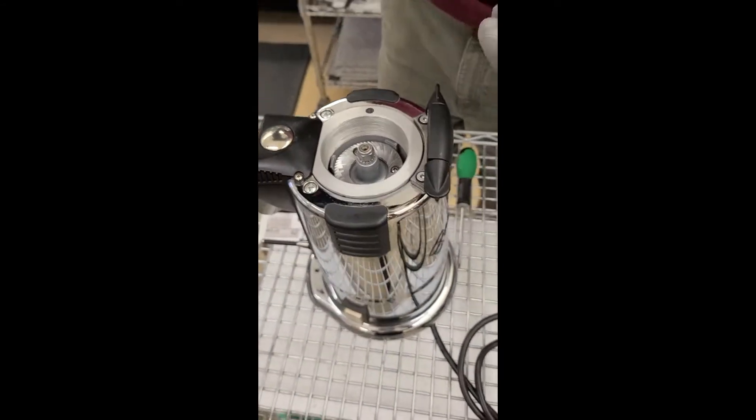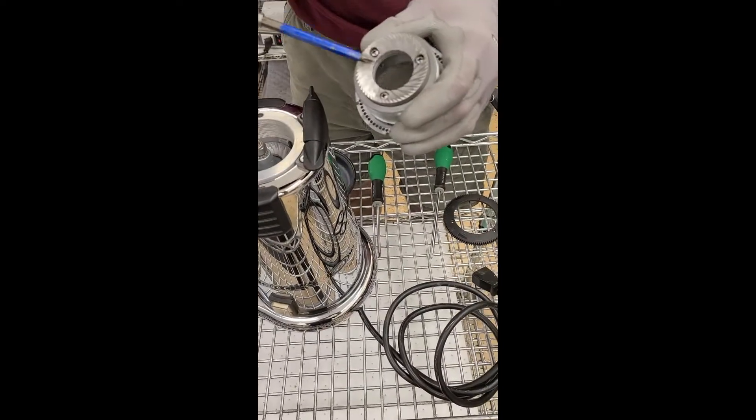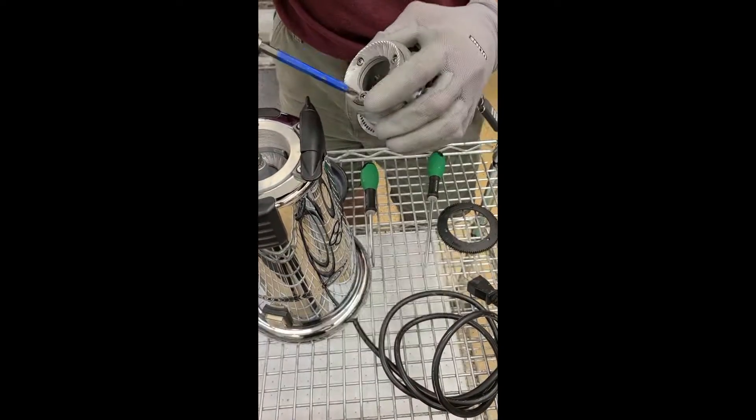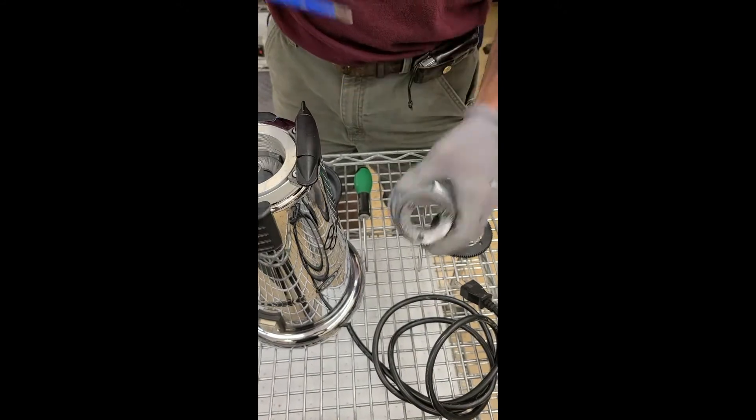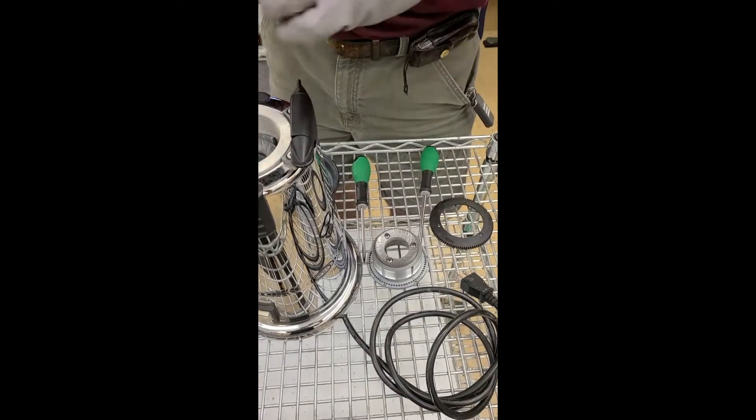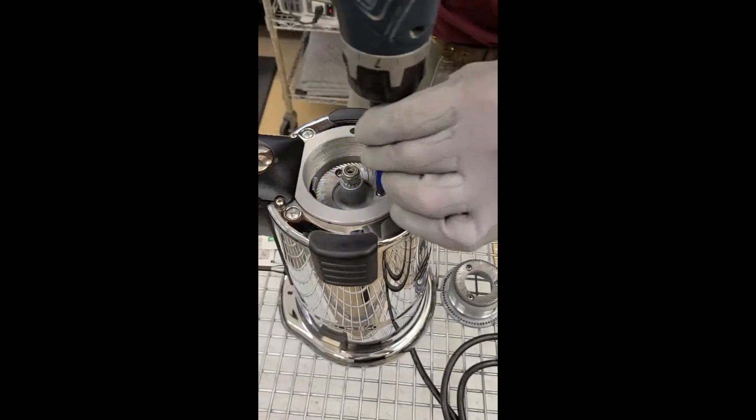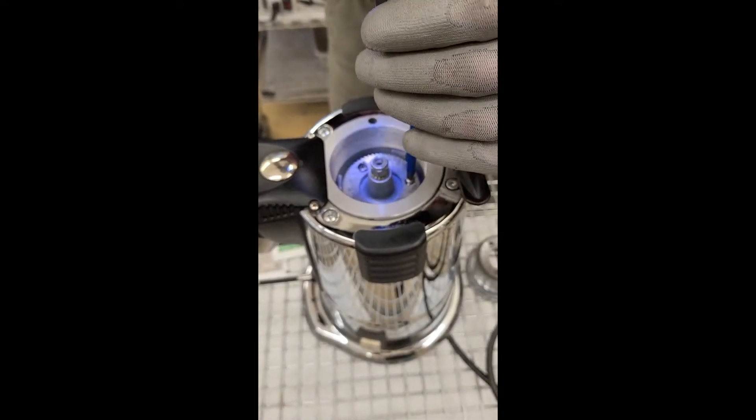This is already clean, but the point is just remove the screws, remove the burr and clean, inspect underneath, and we are doing the same for the lower one.